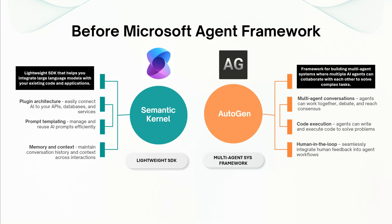You would use AutoGen when you need multiple specialized agents working together. For example, building a research assistant where one agent searches the web, another analyzes the data, and a third writes a summary report. It helps with multi-agent conversation, code execution, and human-in-the-loop tasks.